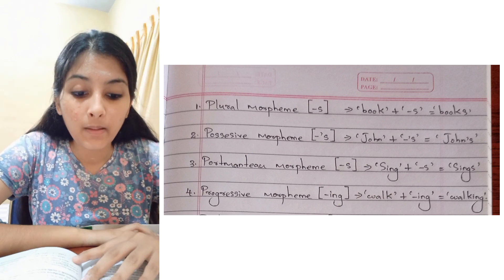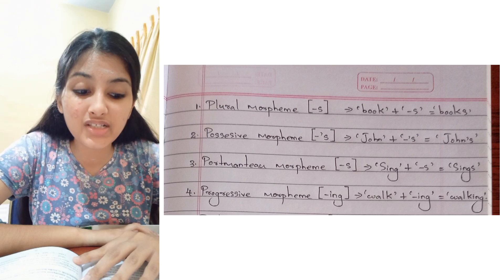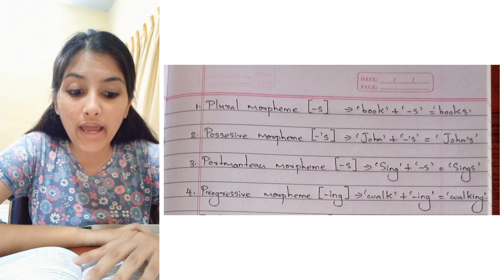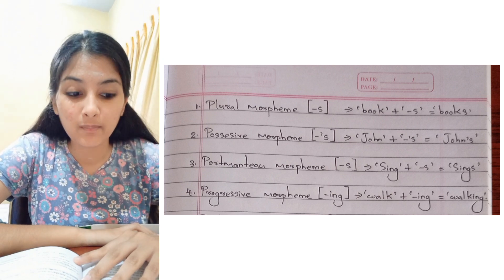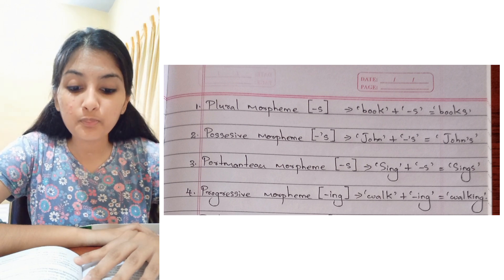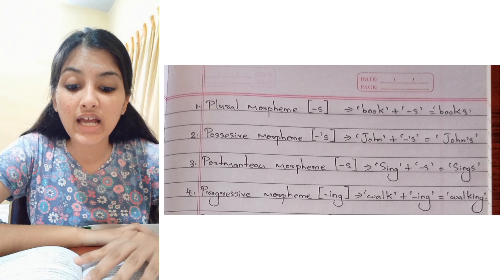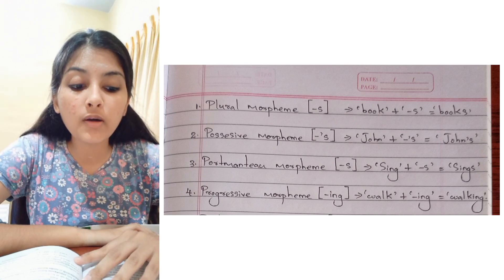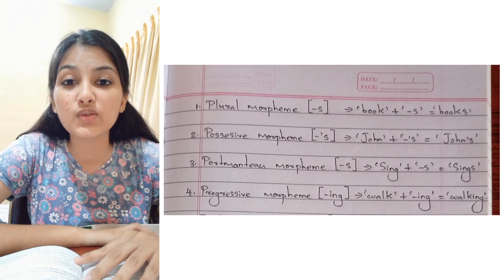The third is the portmanteau morpheme or present tense third person singular morpheme, also '-s': sing + s = sings, as in 'John sings beautifully.' The fourth is the progressive morpheme '-ing': walk + ing = walking, as in 'John is walking.'